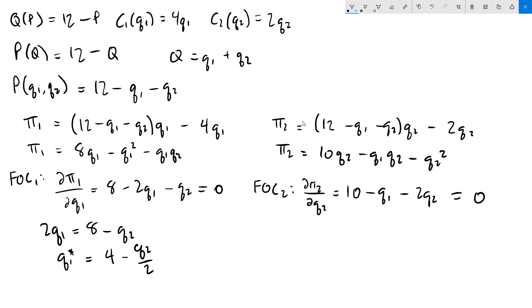This tells us firm 1's plan for what quantity they should produce for any possible q2 that firm 2 is going to throw at them. We'll do the same thing for firm 2, solving their first order condition for q2. I'll add 2q2 to both sides, and then divide both sides by 2 for our best response, 5 minus q1 over 2. That takes us to the end of part A of the problem.